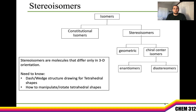You'll also want to get comfortable manipulating and rotating tetrahedral shapes. In class you might have talked about conformations and Newman projections — these are ways of looking at molecules and rotating them in three dimensions. Since stereoisomers differ in their three-dimensional structure and orientation, it's really important that you're comfortable thinking about molecules in three dimensions. If needed, go back and review how to draw tetrahedral molecules and how to move them in space.